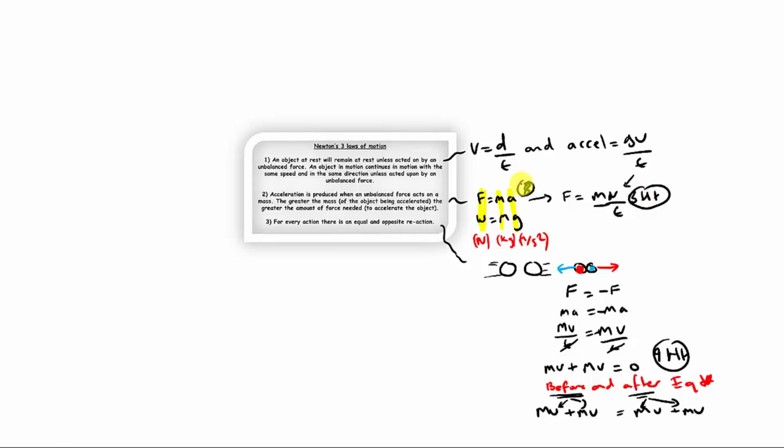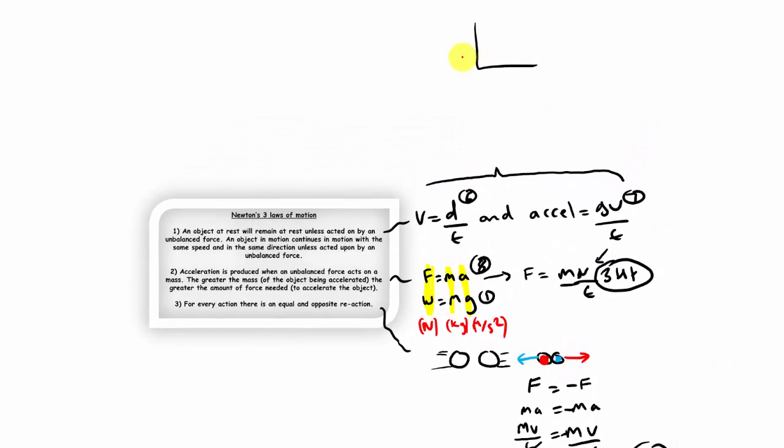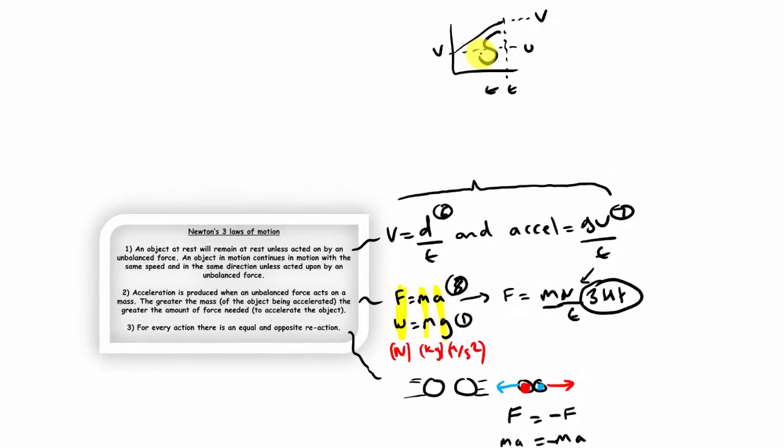Now it's time to look at displacement time graphs and velocity time graphs, both of which are vectors. In other words they have both magnitude and direction. If you've been looking at graphs it's useful to know how to calculate gradient, which is change in y divided by change in x. It's also useful to know how to calculate the area of both a rectangle and a triangle, which are base times height and half base times height respectively.